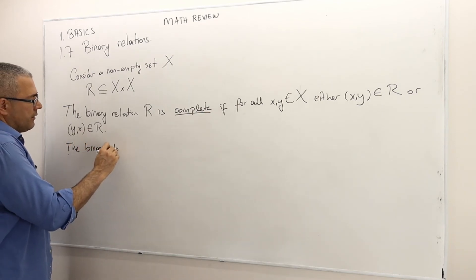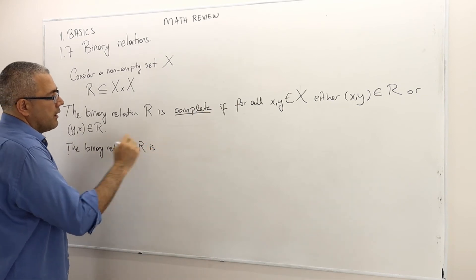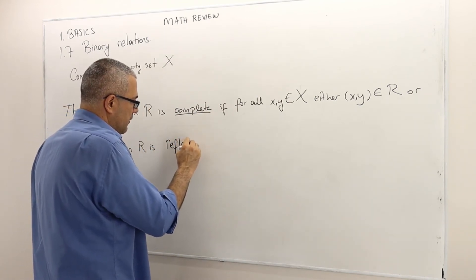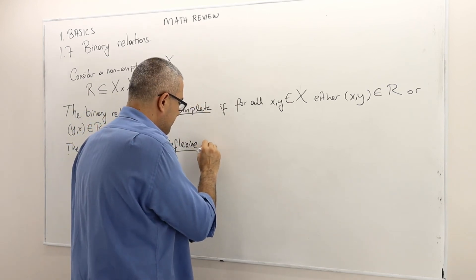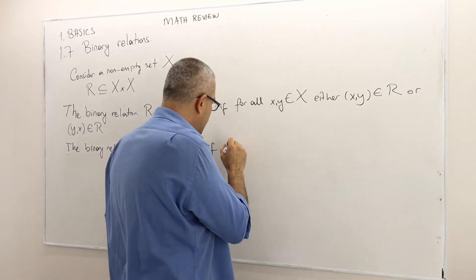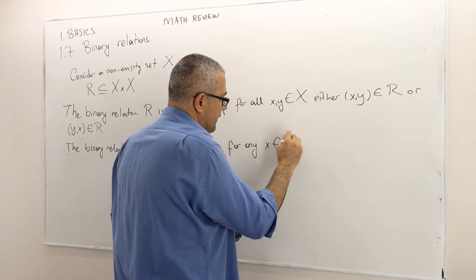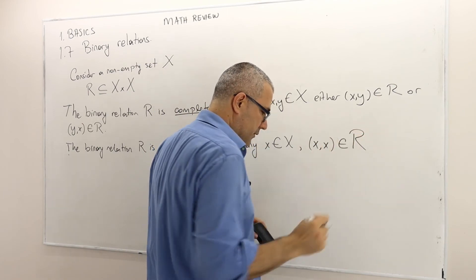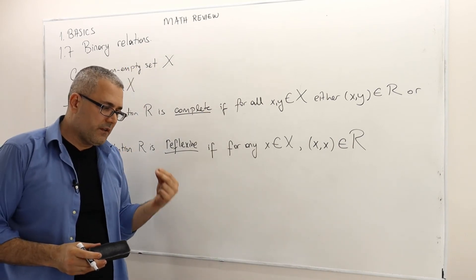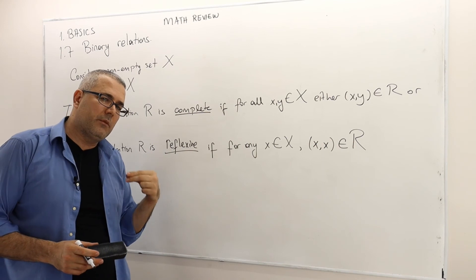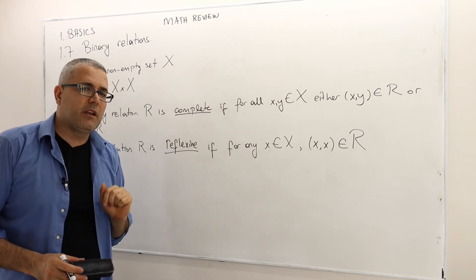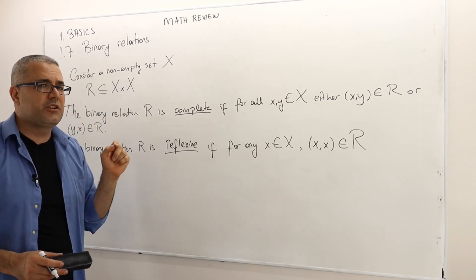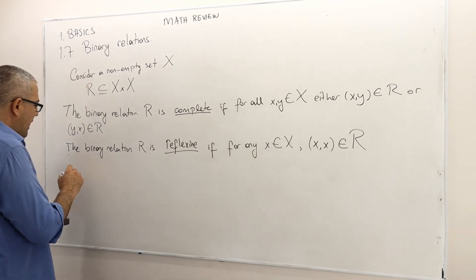The binary relation R is reflexive if for any x in X, we have (x, x) as an element of R. So a reflexive relation can compare every element with itself. The strictly-less-than relation over the integers is therefore not reflexive, because 2, for example, is not strictly less than 2.